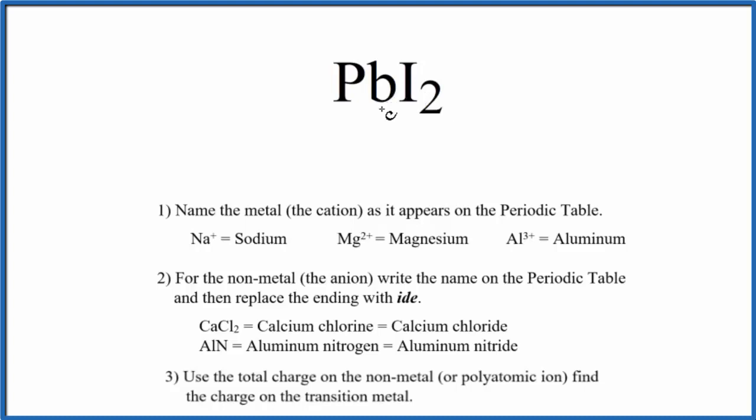So a metal and a non-metal, that's an ionic compound, and specifically, lead is a transition metal. So because we have this ionic compound with a transition metal, we'll use these rules to write the name for PbI2.